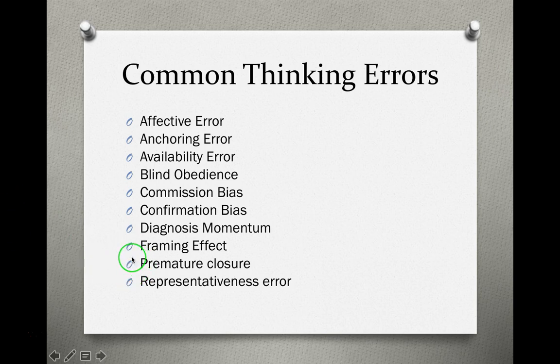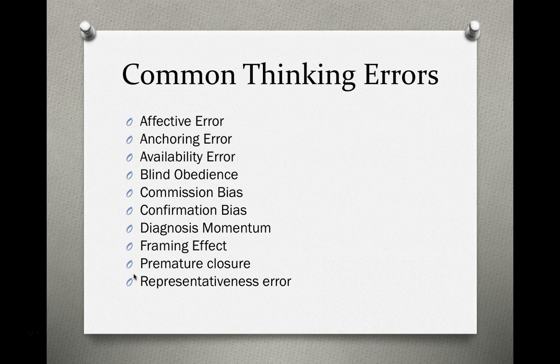Premature closure is deciding too soon — I really wish I could get one other rating scale or another individual's perspective on their adaptive behavior, but I don't have time, so I'm just going to go with the information I have and make the decision too soon. And representativeness error is what is typically true — I know individuals with intellectual disability are always gullible, so I witnessed that, so I'm going to make a diagnosis.